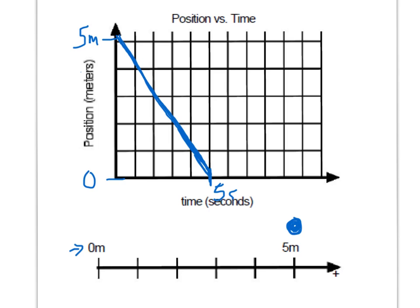And then it took him 5 seconds to get there. So if you notice, I didn't draw this the greatest, but if he's going 5 meters in 5 seconds, that slope is 1. So after 1 second, he should be at 4 meters. And after 2 seconds, he should be at 3 meters. And after 3, he should be at 2. And after 4, so on and so forth. So I know that at each second, he's going to be a meter closer to 0.